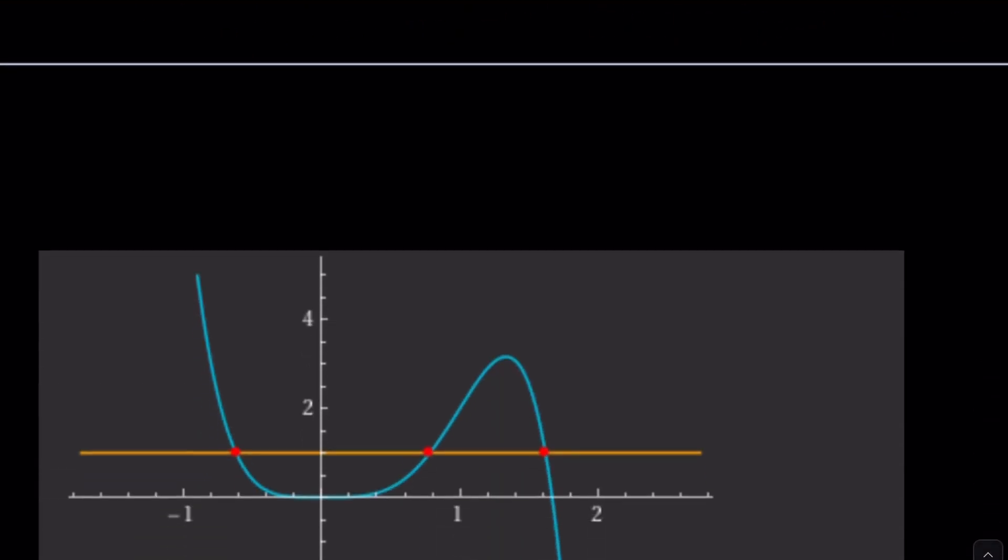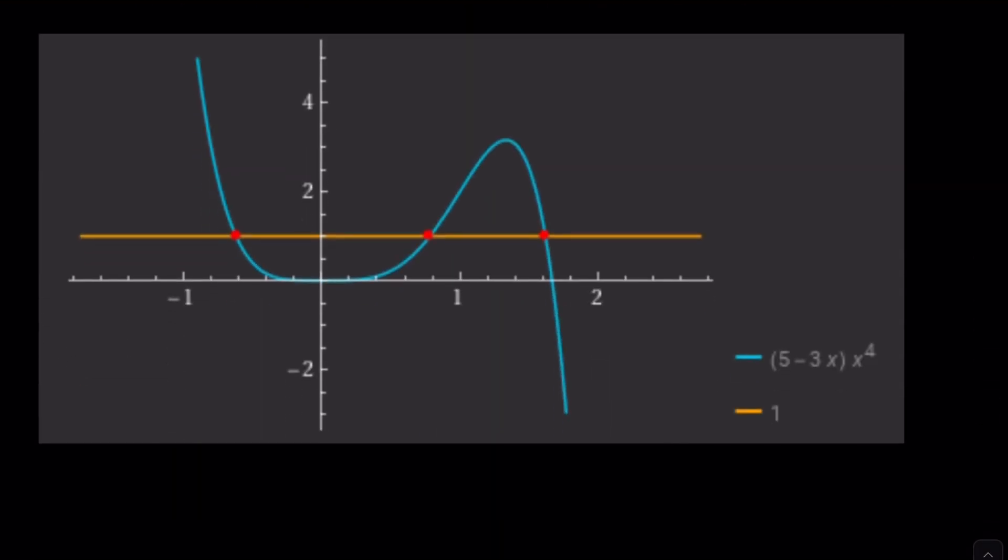So here's the graph. Uh-oh. There seems to be three real solutions. You know why? If you divide this equation by x squared minus x minus 1, you'll find the cubic and if you solve that cubic you will find the other real solution. Hopefully.